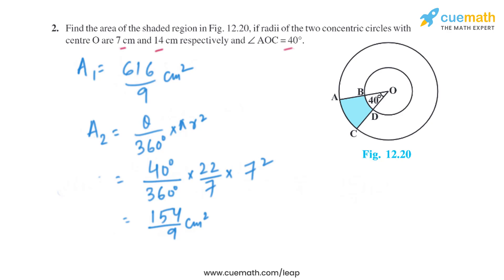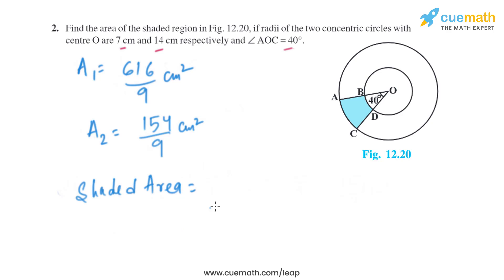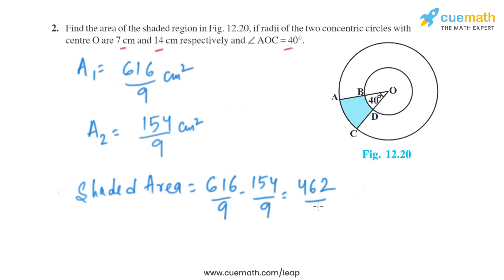Subtracting them, the shaded area equals 616/9 minus 154/9, which gives 462/9. On further simplifying, we get 154 divided by 3 square centimeters. That is the area of the shaded region.